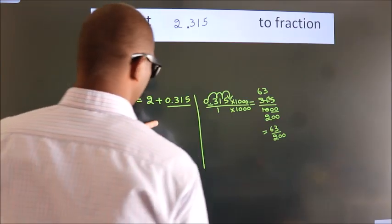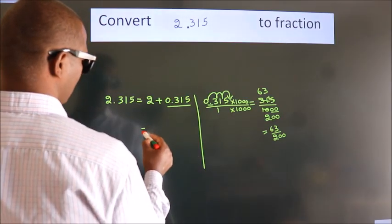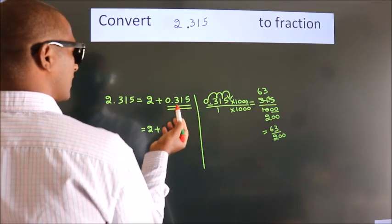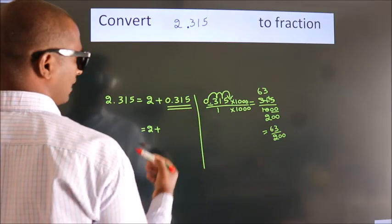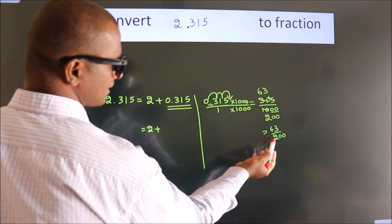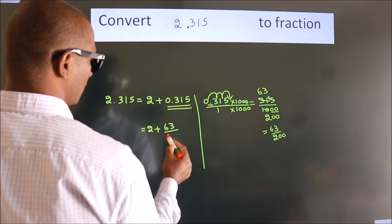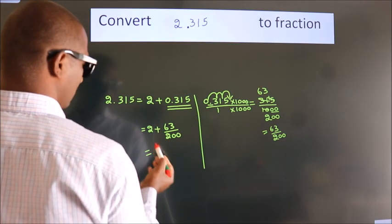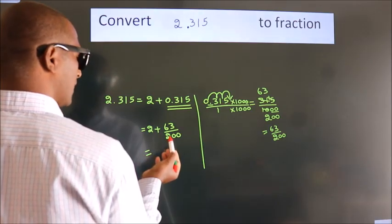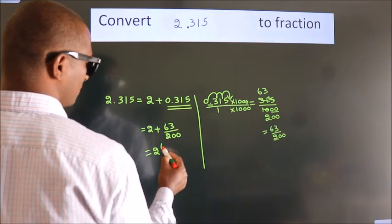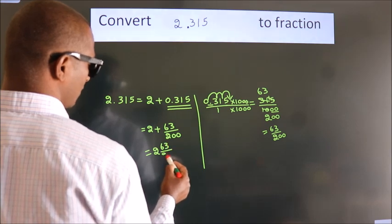Now here, 2 plus in place of 0.315, now we write this fraction, 63 by 200. 2 plus 63 by 200. In mixed fraction it is 2 and 63 over 200.